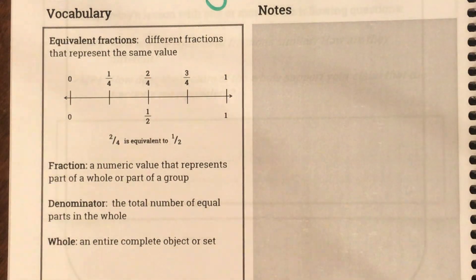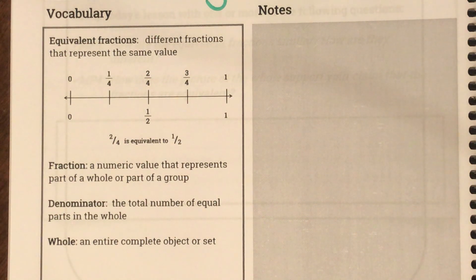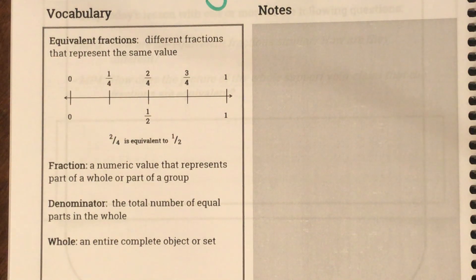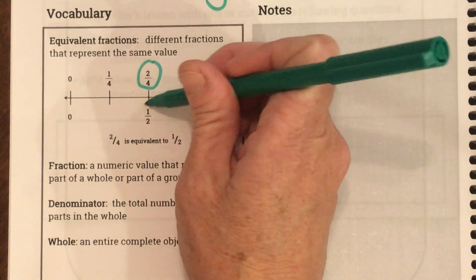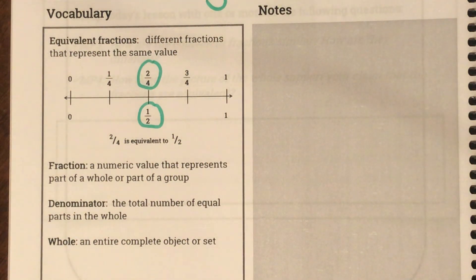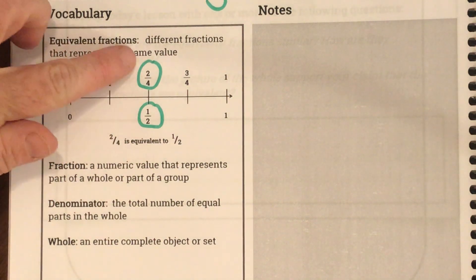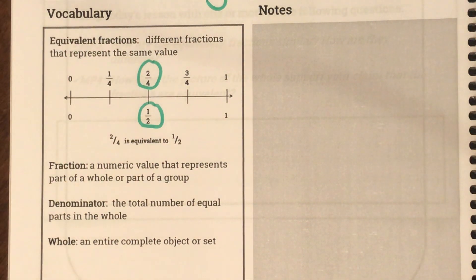Let's look at our vocabulary. Our first word is equivalent fractions — different fractions that represent the same value. And when they say different, they mean it looks different. So they appear to look different. Right here, they're showing us two-fourths has the same value as one-half. They have different numerators — two and one — and different denominators, but their value is exactly the same.